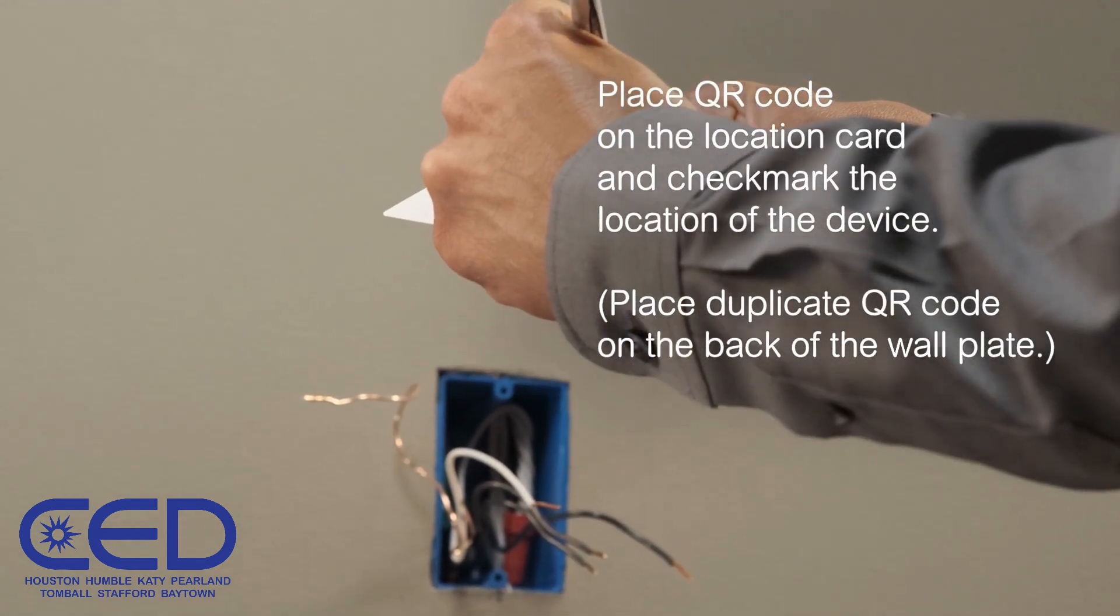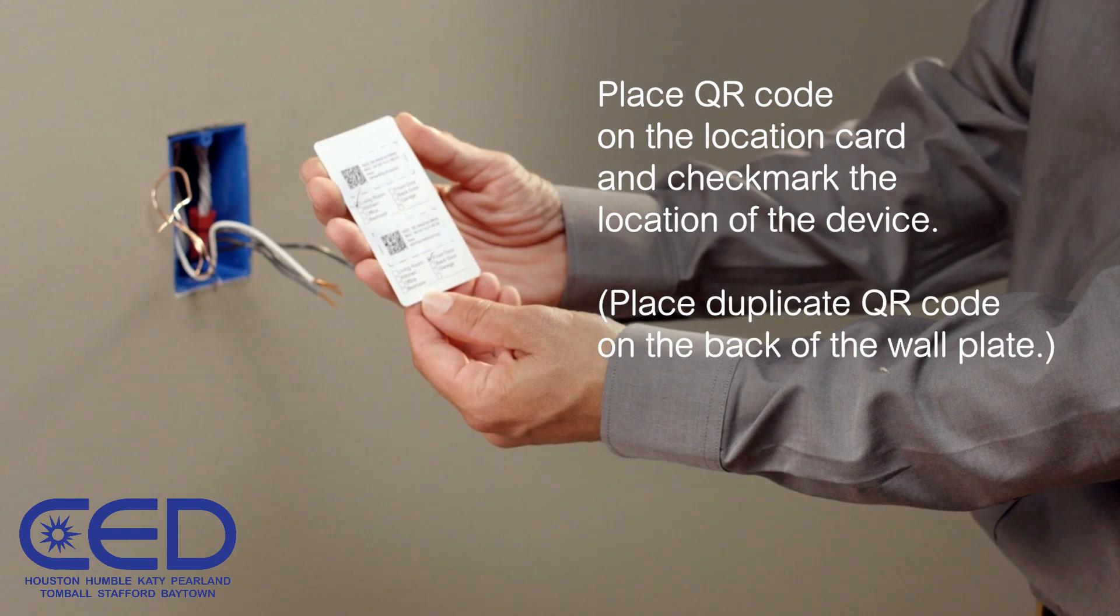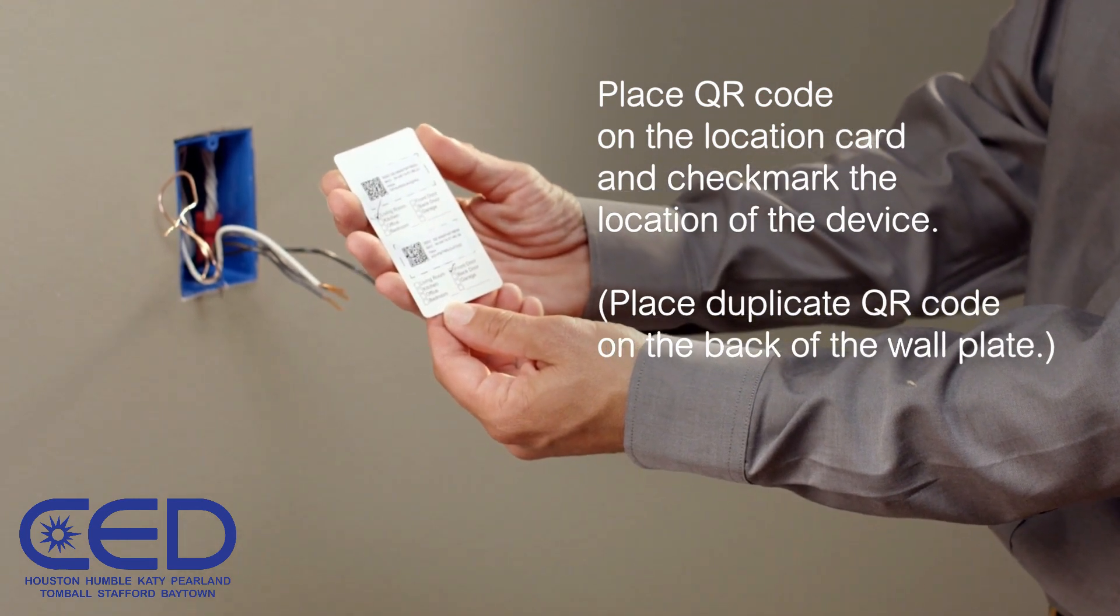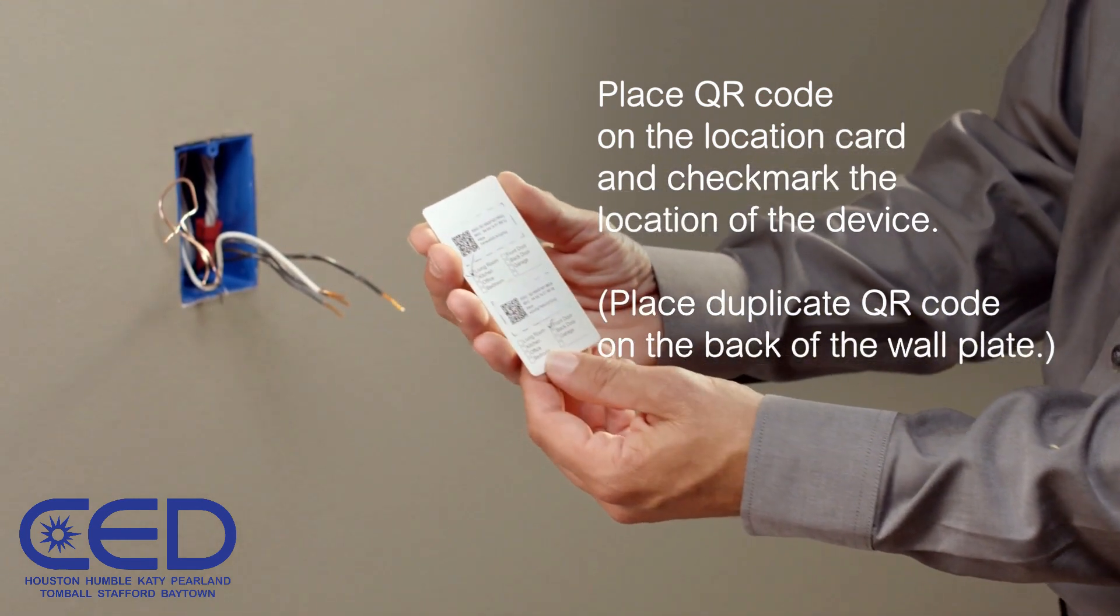It's best to place the QR code on the location card and checkmark the location of the device. Place duplicate QR code on the back of the wall plate.